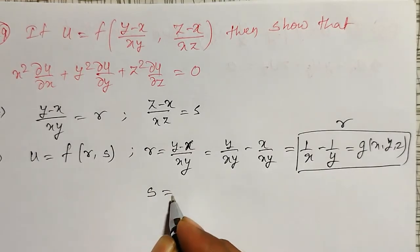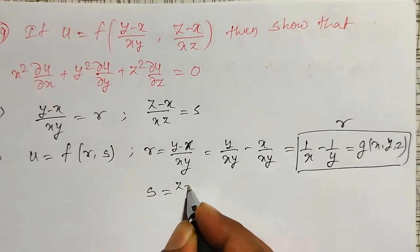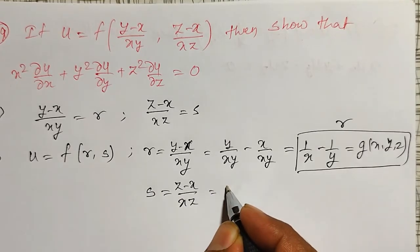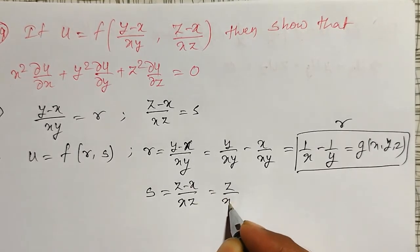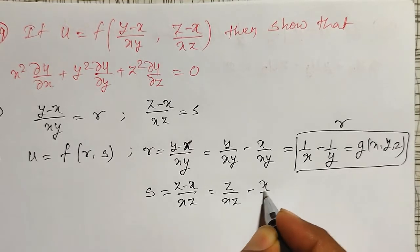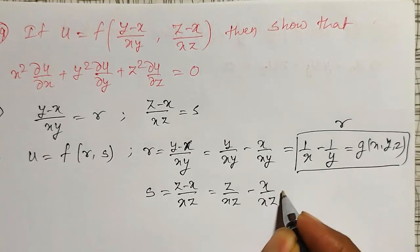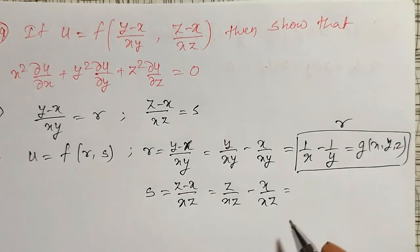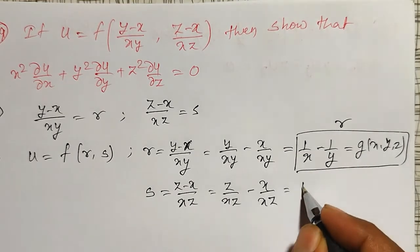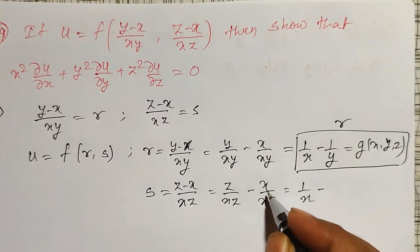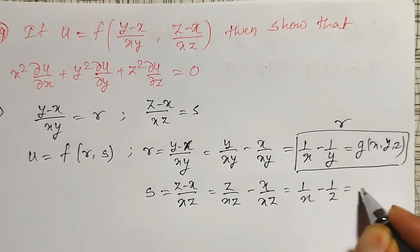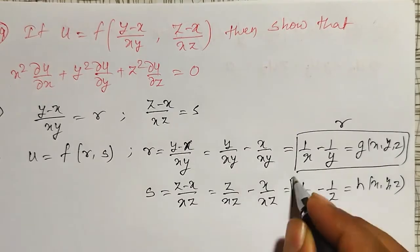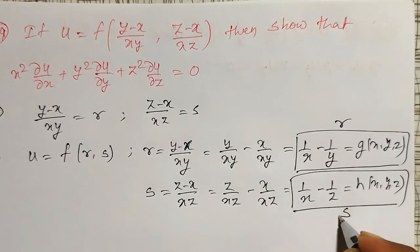Similarly, s I will write as z minus x divided by xz. I can write it as z divided by xz minus x divided by xz. I am splitting this because I will take a partial derivative — it will become simple. Z cancels, and again it is 1 by x minus 1 by z. It is also some function of x, y, z. This is my s.